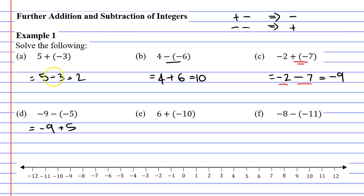So how do we do that? We start on negative nine, and we're adding five, so we move five places to the right, landing on negative four. So this one equals negative four.